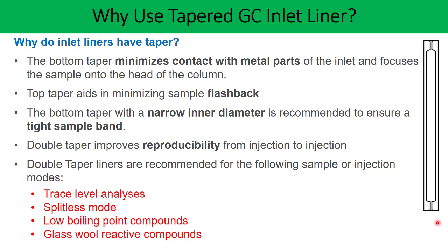Glass wool is also a very effective tool to increase vaporization and homogenization of the entire sample vapor. However, if a compound reacts with the glass wool, you may not be able to use it. In the absence of glass wool, there may be a chance of lower injection-to-injection consistency and the sample may sometimes not get completely vaporized. To avoid this, you can use double tapered glass inlet liners. Please let me know in the comments if you know any other reason why you must consider using tapered glass inlet liners. Thank you so much.